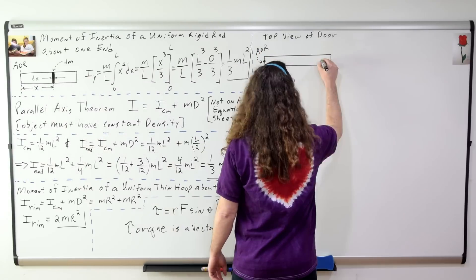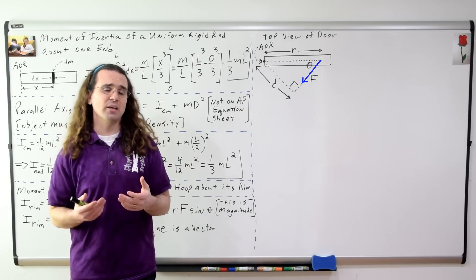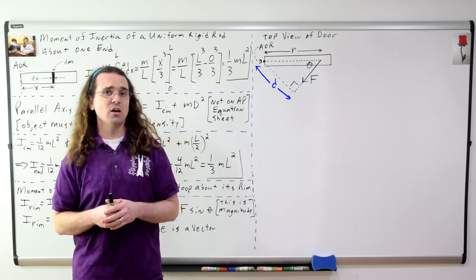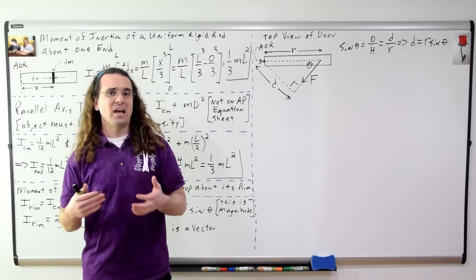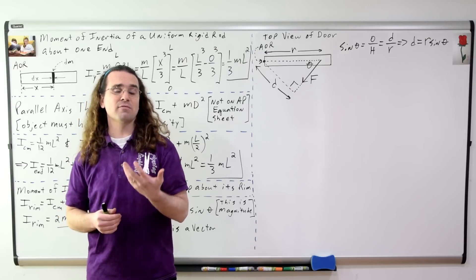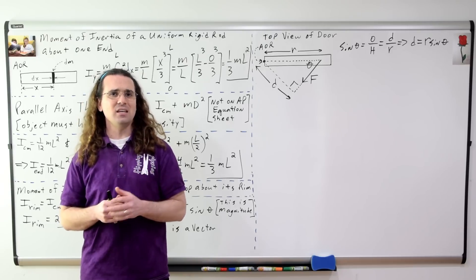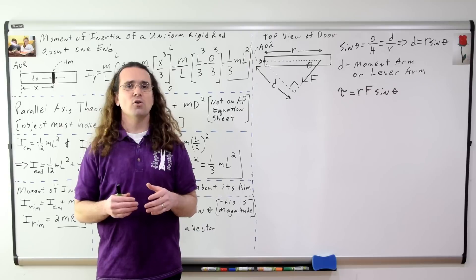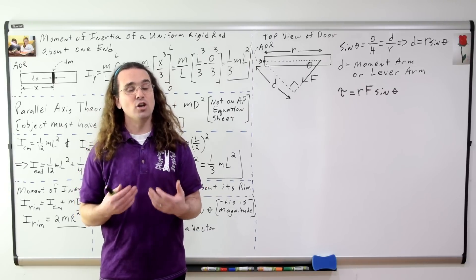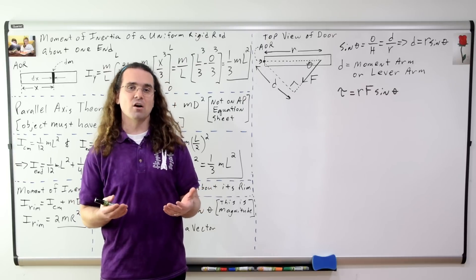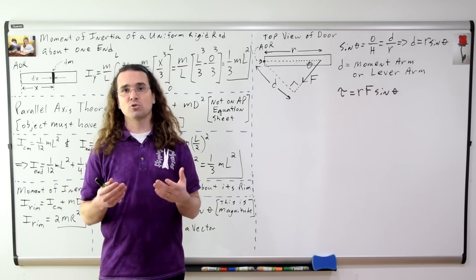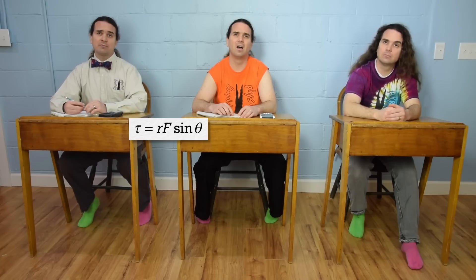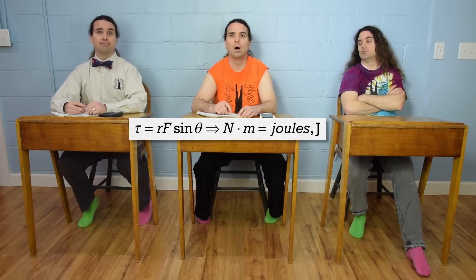Looking at a top view of a force applied to a door at distance R from the axis of rotation, we have a distance d which we can solve for using sine: sine theta equals d over R, so d equals R sine theta. This d is defined as the moment arm, or lever arm, or effective distance. Notice that if d equals zero, no torque is applied. If the moment arm is maximized using an angle of 90 degrees, the maximum torque is applied. The units for torque are newton meters. Technically newton meters are the same as joules, but to differentiate torque from energy, we use newton meters for torque and joules for energy.